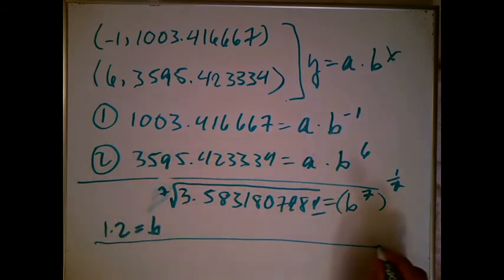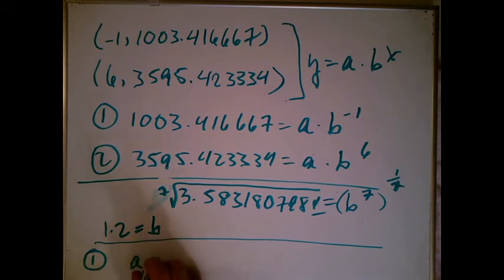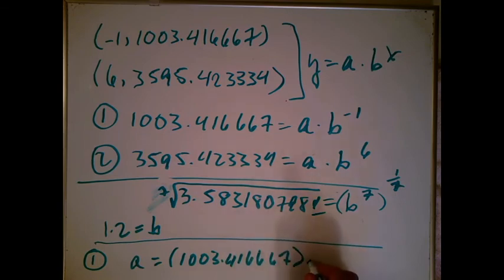Now, finally, we need to find a. And to find a, I have to plug back into equation one. If I look at equation one, what I need to do is to solve for a is just to multiply both sides by b. So I'm going to get 1003.416667 and multiply by my really nice b, which is just 1.2.